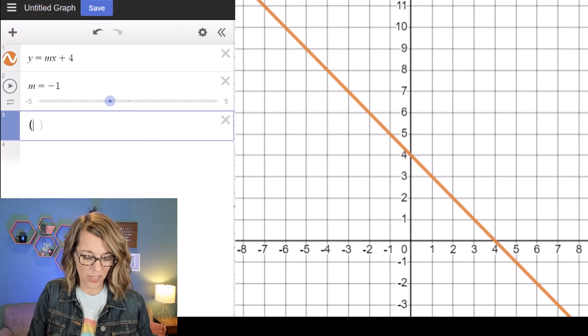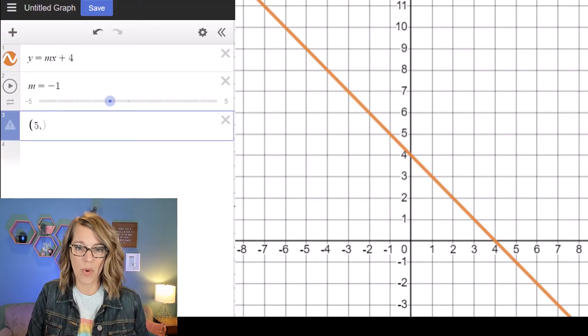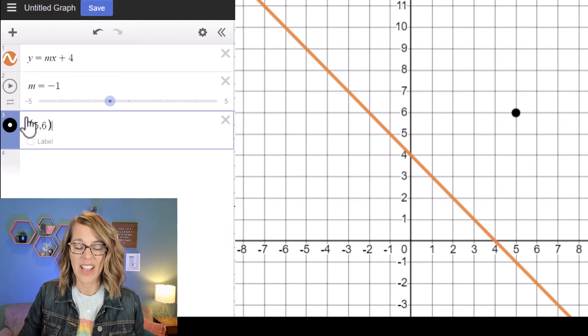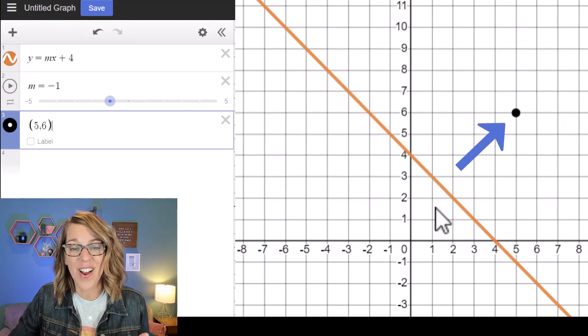In addition to equations you can also plot points. So let's say that I want the point 5 comma 6, and it plots the point there on my grid.